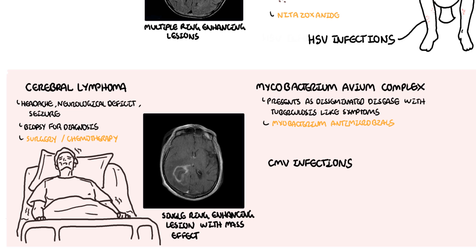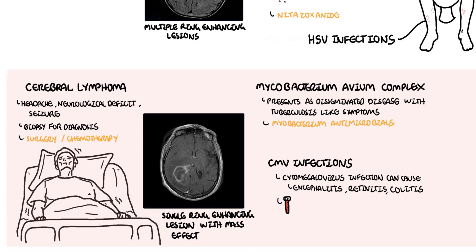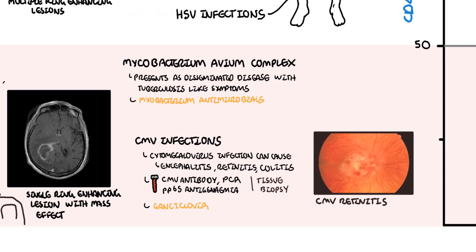CMV, cytomegalovirus, can cause many diseases in someone with HIV who has a low CD4 cell count. These include CMV encephalitis, CMV colitis, and CMV retinitis. Investigations include serology for CMV, PCR for CMV, and the presence of PP65 antigen. Biopsies are essential for diagnosing retinitis and CMV colitis. Treatment of CMV infections includes ganciclovir or valganciclovir.